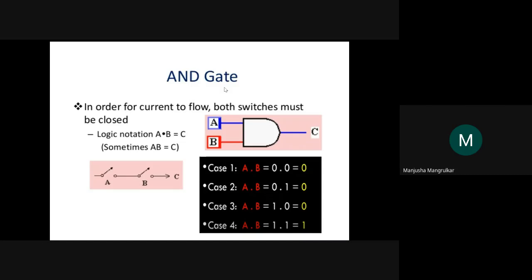AND gate means both conditions must be satisfied. AND gate has a minimum of two inputs and maximum N inputs, with one output. A and B are the inputs, C is the output. If A is open (zero) and B is open (zero), circuit is not complete, C equals zero. If A is open and B is closed, still C equals zero.